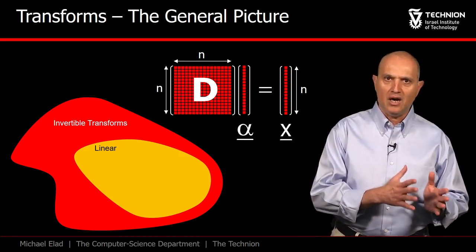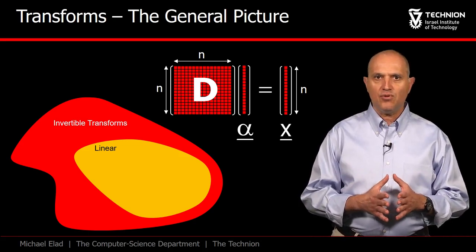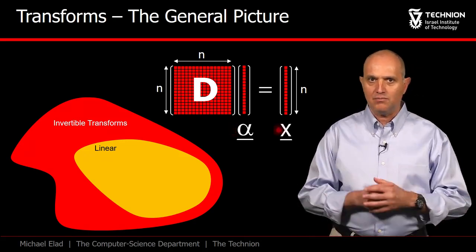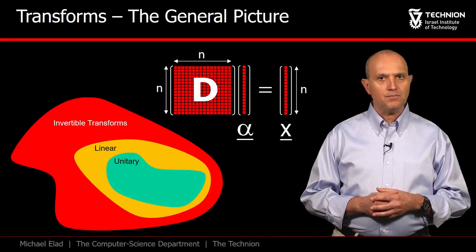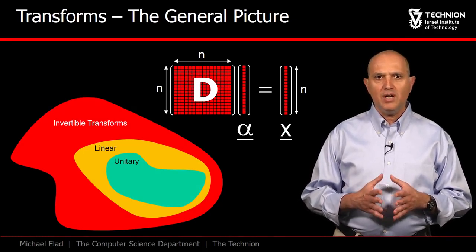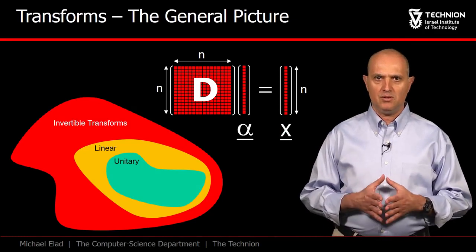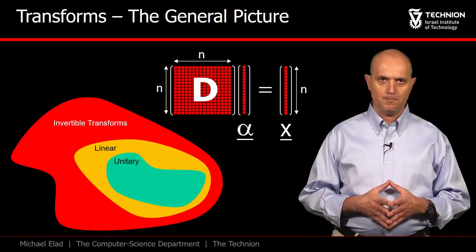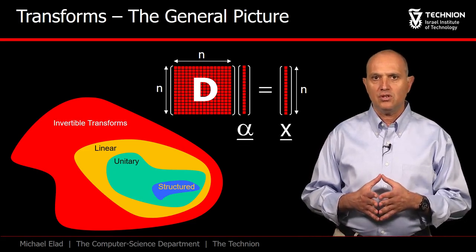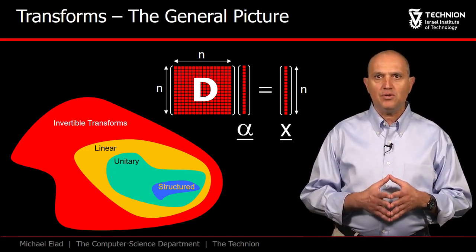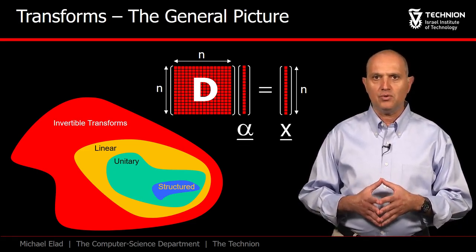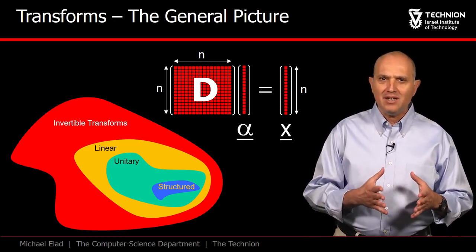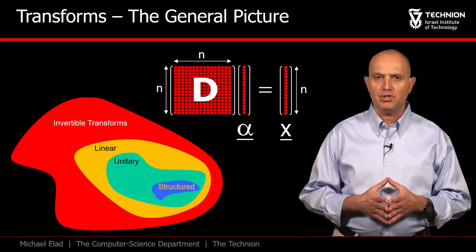Observe that the relation D·α = x stands for the inverse transform, from the representation back to the signal. Oftentimes, even this is not sufficiently simple, and we limit our view to unitary matrices, for which the inversion is replaced by a simple conjugate transpose. And if this is not simple enough, we may introduce structure into the transform in order to reduce the amount of computations from n² to n log n, as indeed done by most of the transforms we have mentioned.